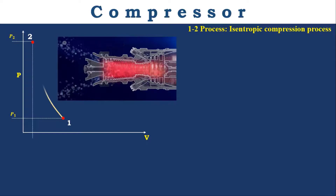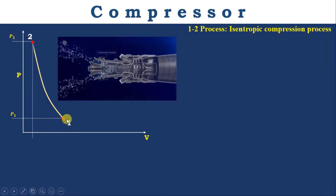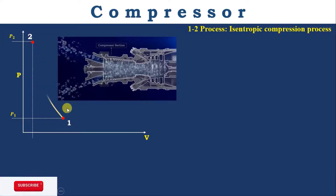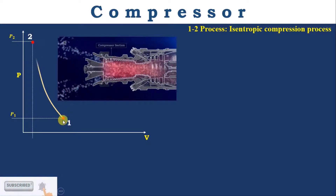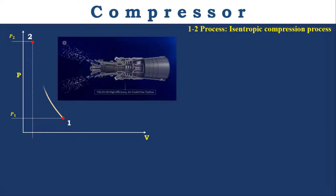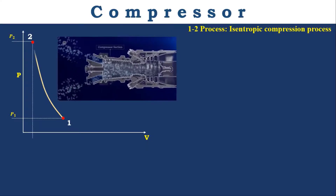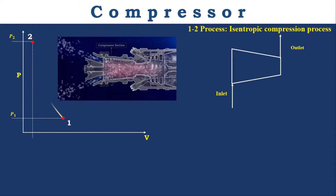In this process, pressure increases from P1 to P2, temperature increases from T1 to T2, and entropy remains constant from S1 to S2, whereas volume decreases from V1 to V2. We will focus on pressure, entropy, and temperature. The cross-sectional area of the compressor decreases from inlet to outlet, as indicated in the diagram.